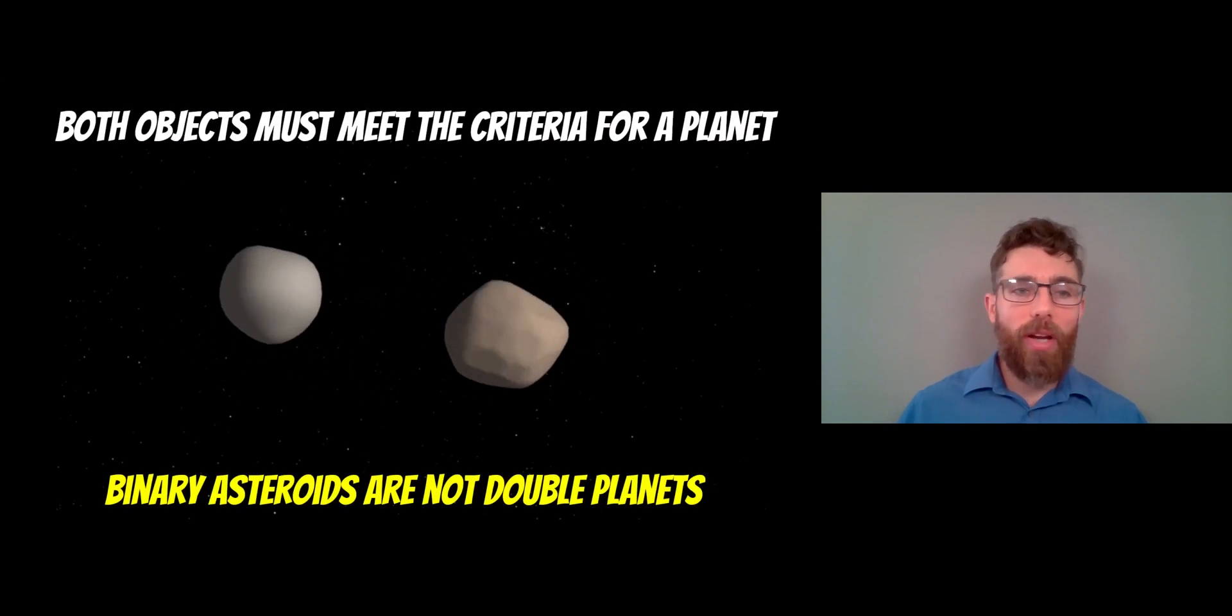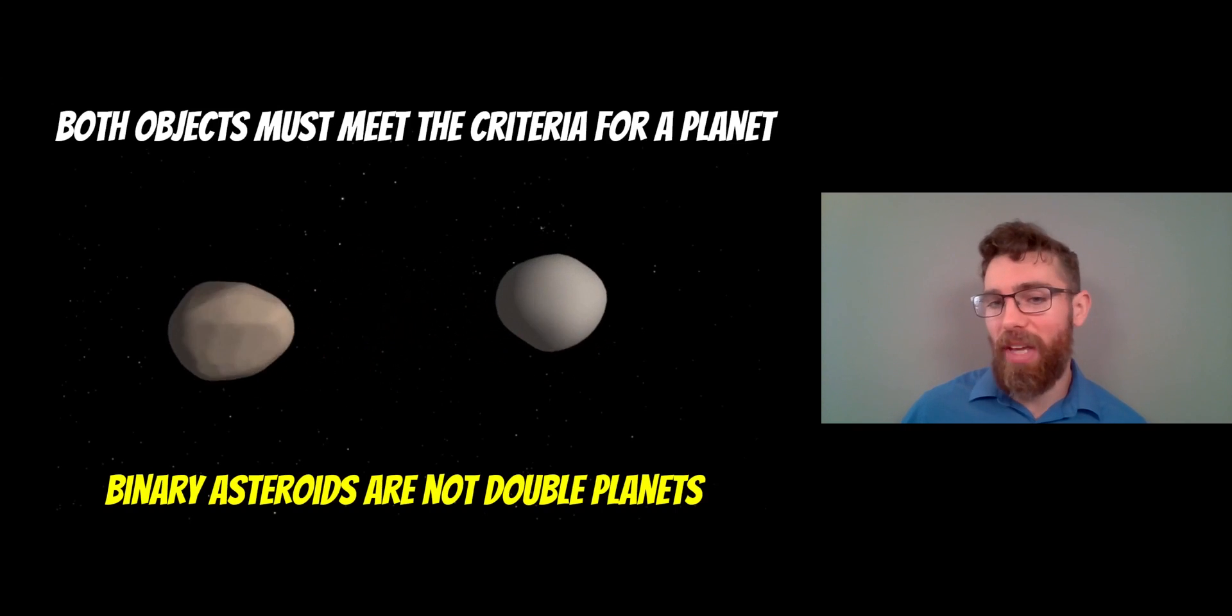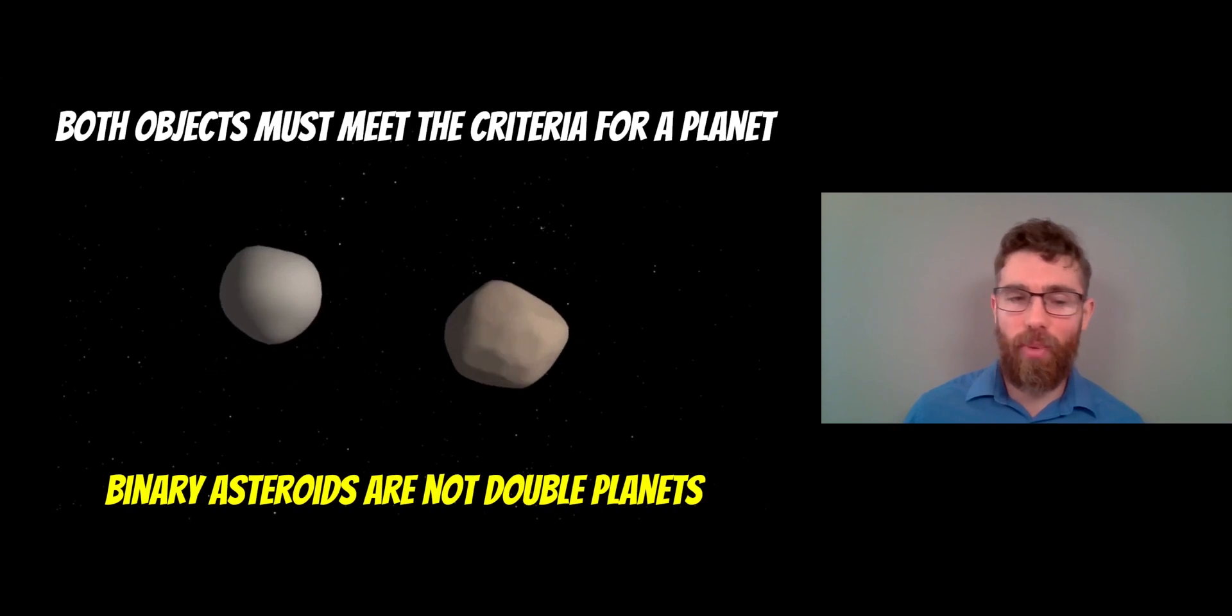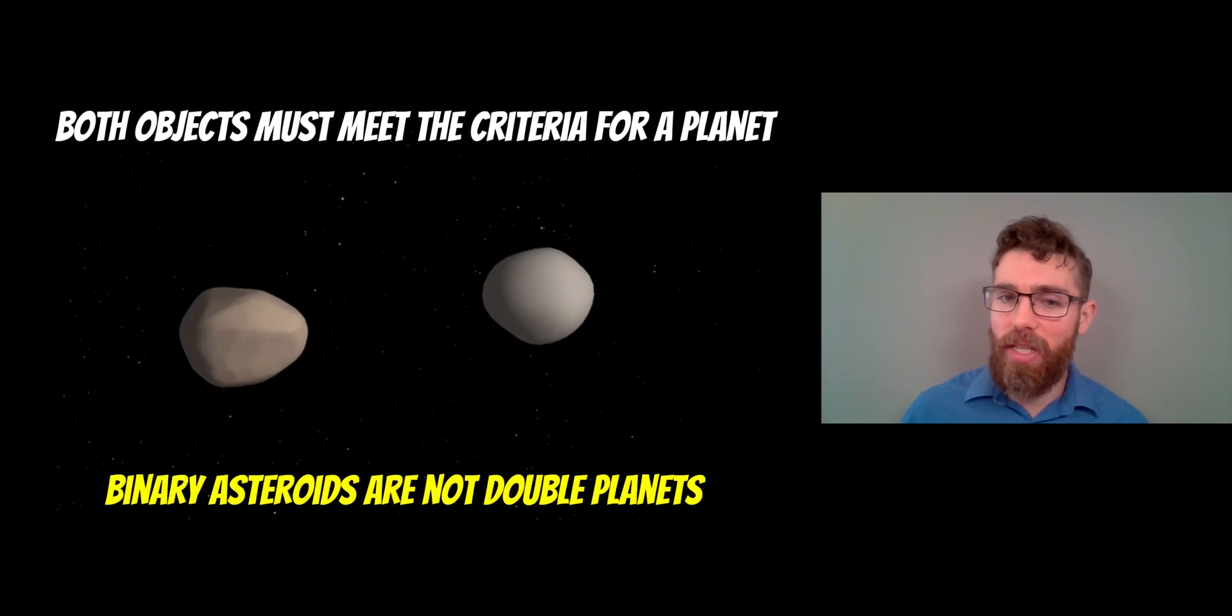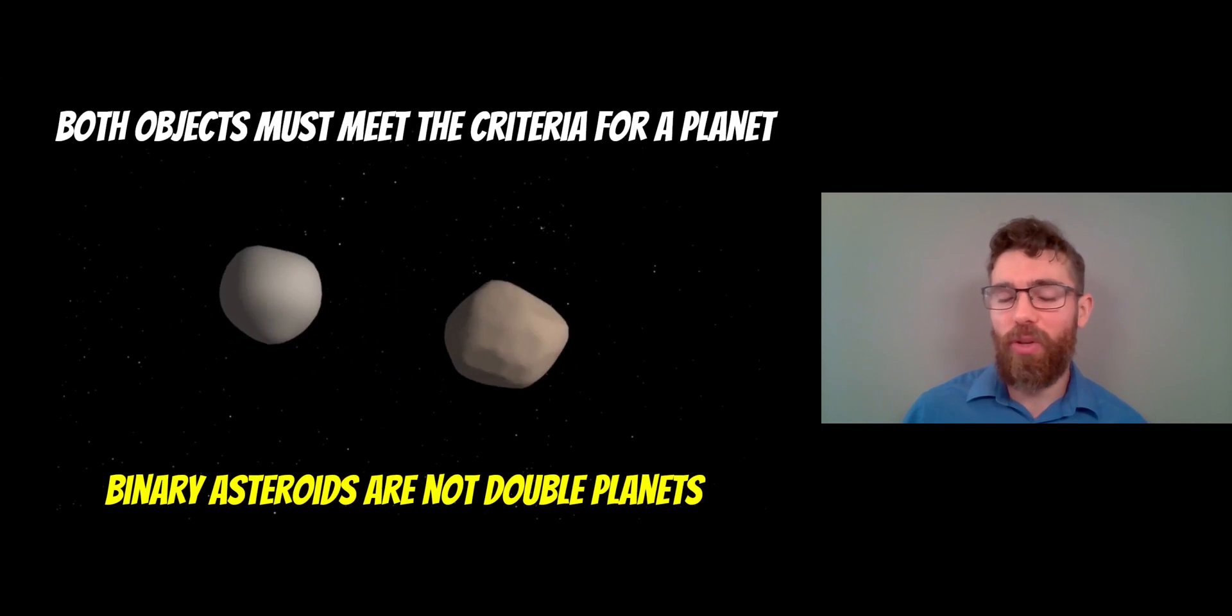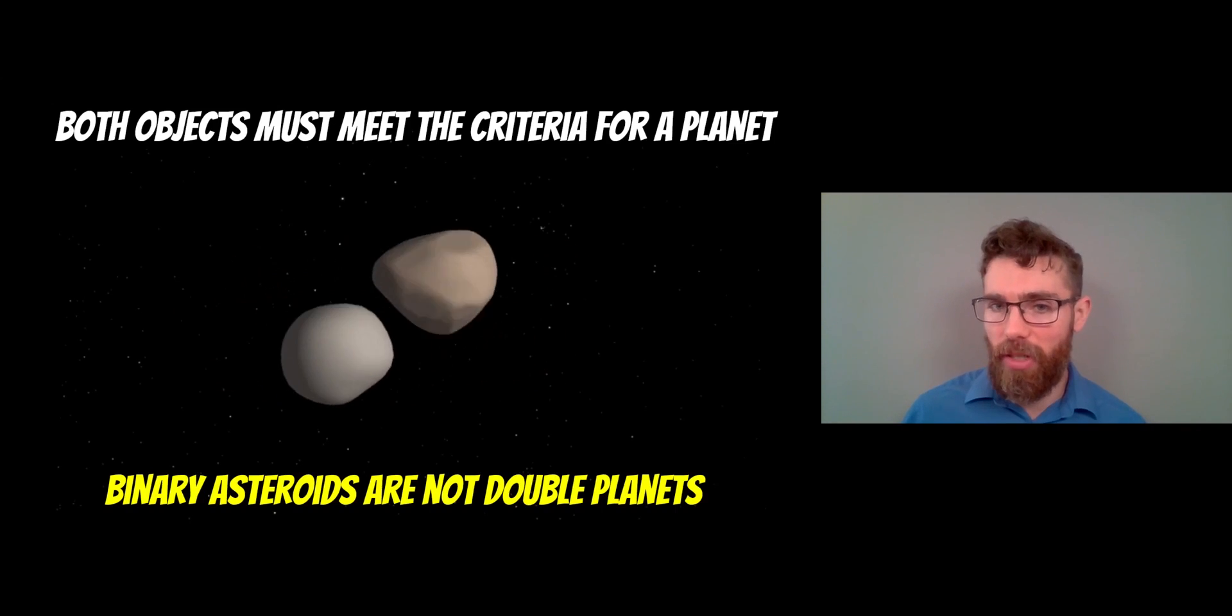And in this binary system, this double system, both objects must meet the criteria to be a planet. You can't just have one of them and then one that isn't, because then what you'd actually have is a planet-moon system. And binary asteroids are not double planets either because they are both too small. You can also have a dwarf planet binary system. So they've both got to meet that criteria.